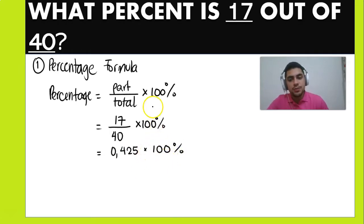Remember, when you multiply by 100, you have to move the decimal comma two spaces, one two, because there are two zeros. So that means that the percentage is 42.5. And don't forget to put the percent sign.